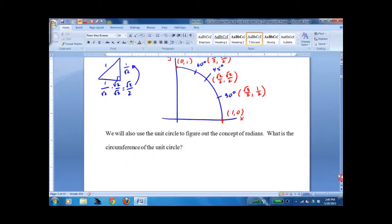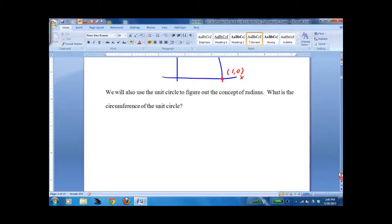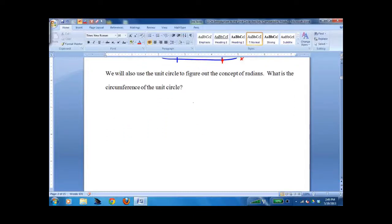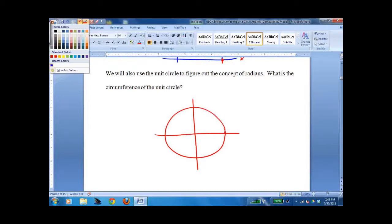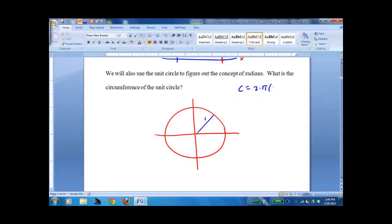Before we get too far ahead of ourselves, we'll go back up to that sketch in a second. We need to do the concept of radians. Unit circle illustrates radians perfectly. This is 1. Therefore, the circumference is 2 times pi times radius. 2 times pi times 1 is 2 pi.